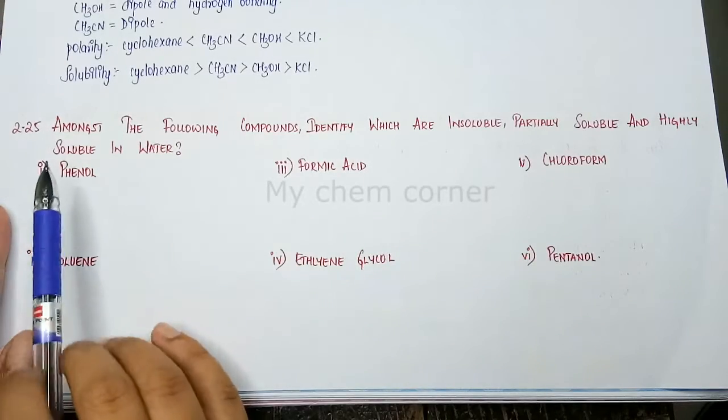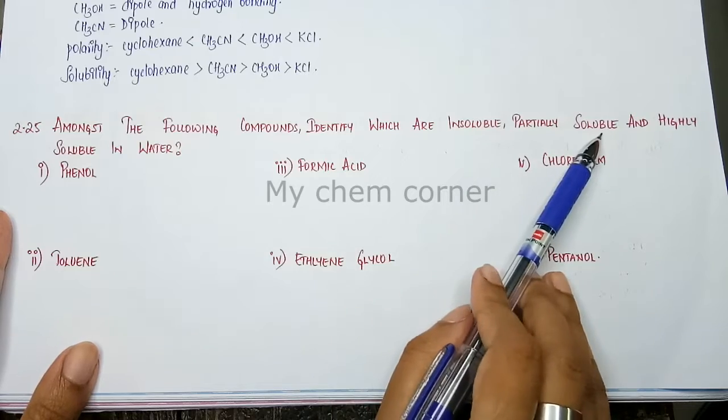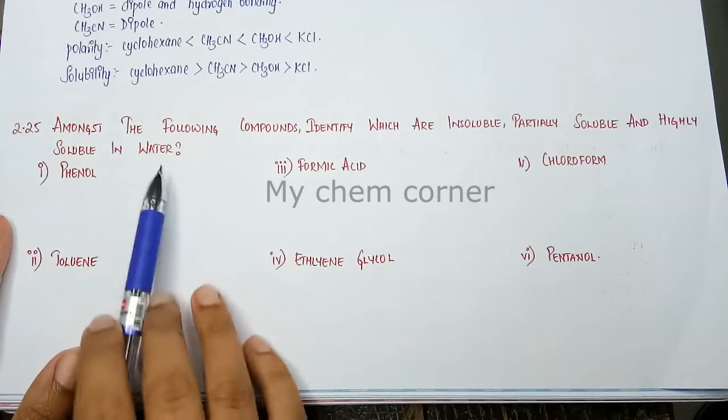Next question is question number 2.25. Among the following compounds identify which are insoluble, partially soluble and highly soluble in water.